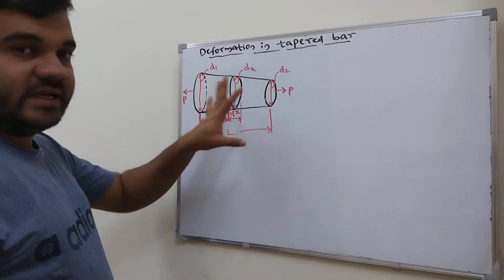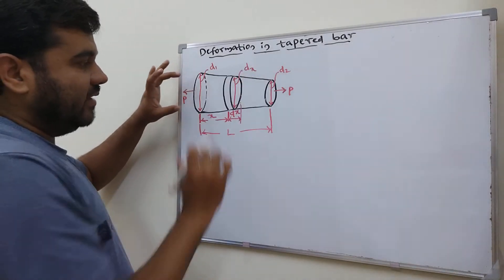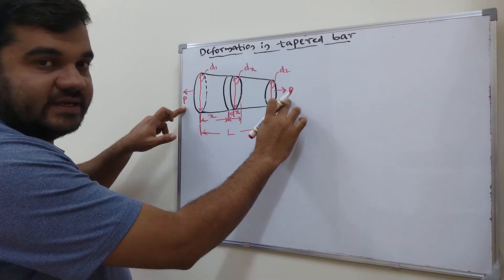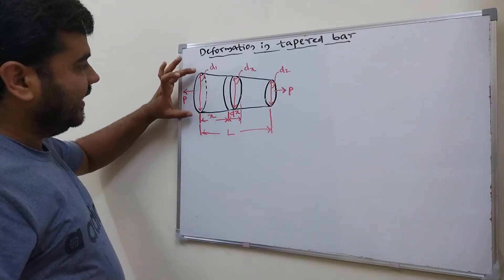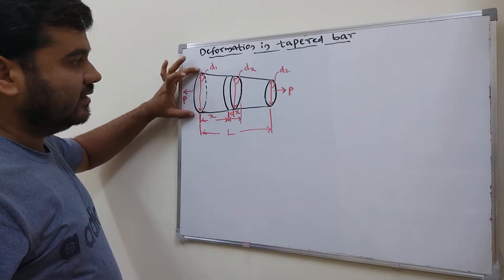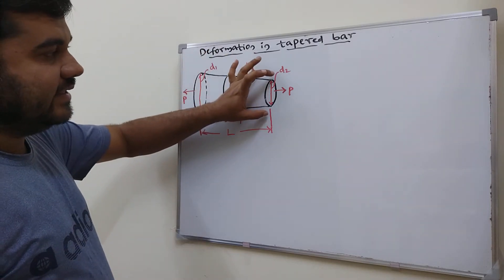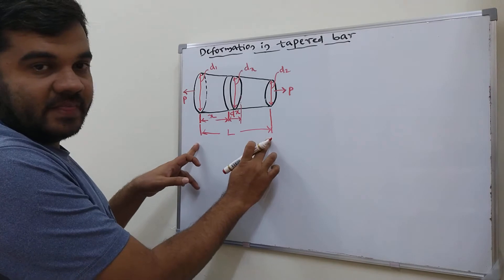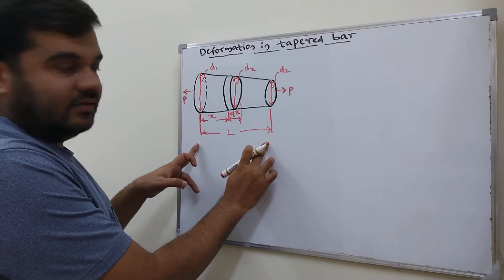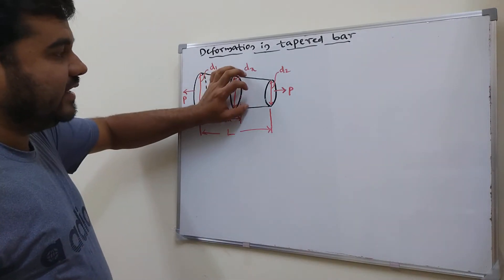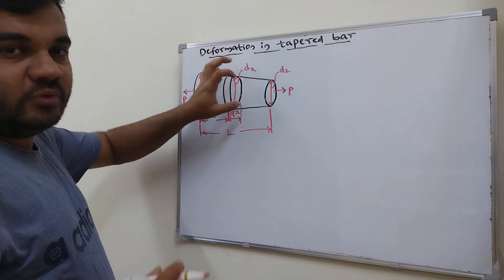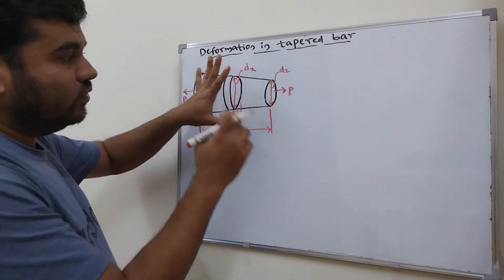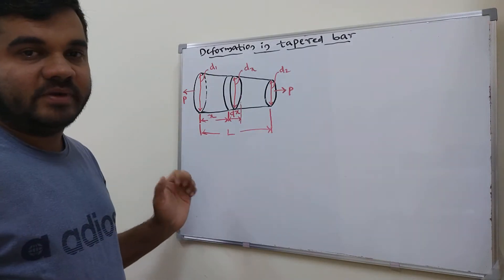The tapered bar shown in the figure is subjected to an axial tensile load P. Its bigger end diameter is D1, smaller end diameter is D2, and its length is L. We consider a small elemental portion and first derive the deformation for that element, then move to the whole tapered bar.